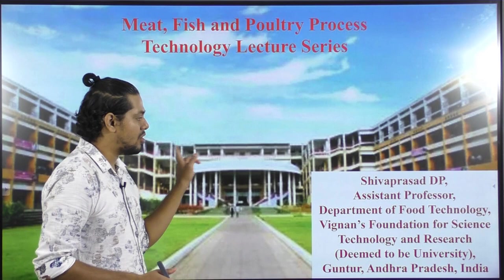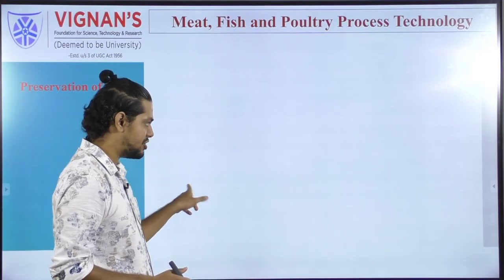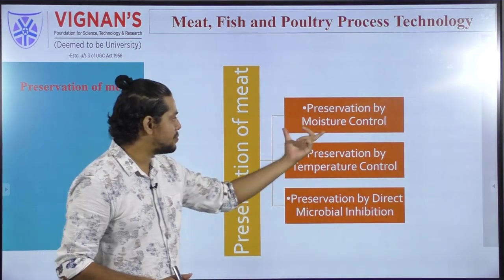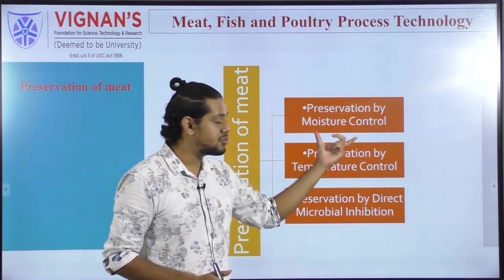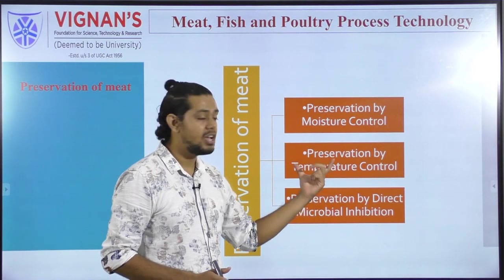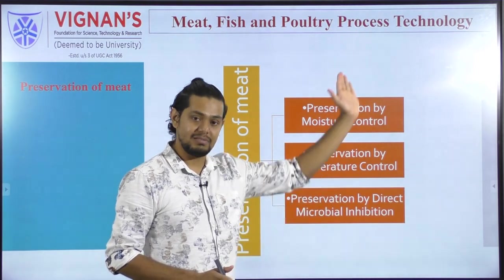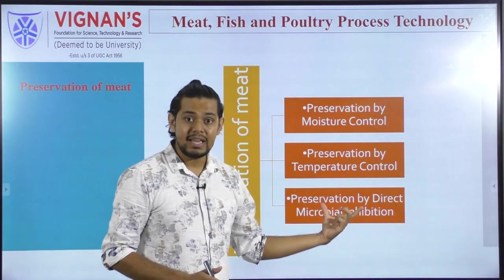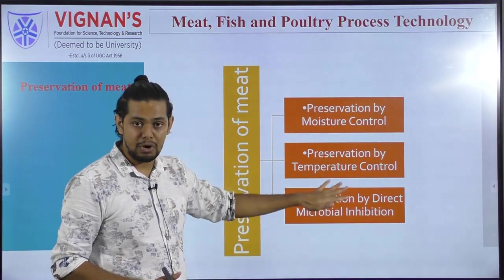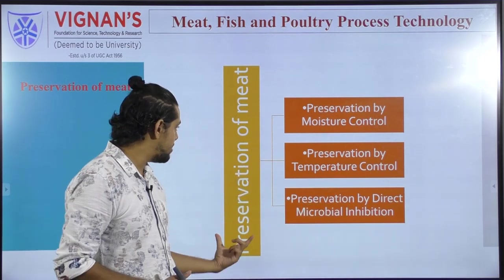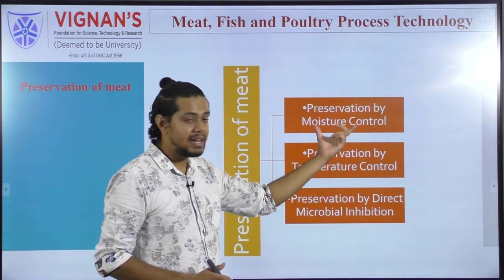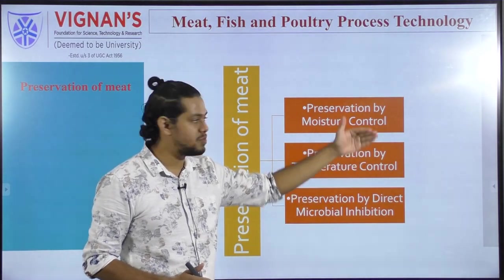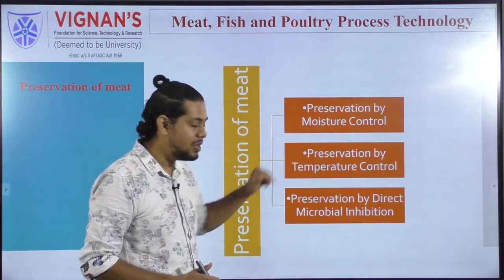Whenever we talk about preservation, we can classify them into three different types. First is preservation by controlling moisture, second is preservation by temperature control — which can be increase or decrease in temperature — and third is preservation by direct microbial inhibition. These are the three important classes of meat preservation, and we will now study the individual types and techniques employed in each.